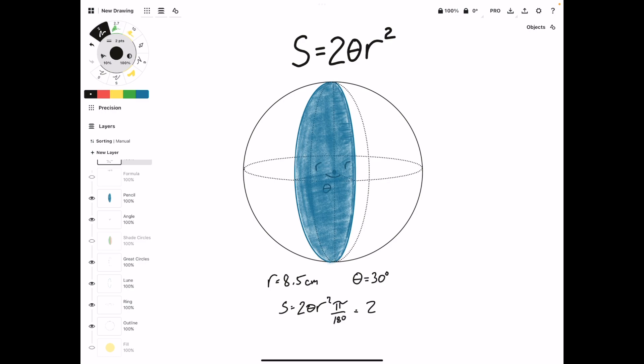Now we can plug in everything as normal times 8.5² π/180. And then if we plug this in, what we're going to get is 75.66 centimeters squared. So just remember that if you have a degree value, you just need to add in this π/180 to the formula.